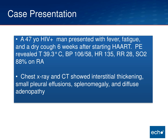I will start with a case presentation. This is a case that Heidi Crane, one of our faculty members here, and I took care of many years ago with a bad outcome — but I think we learned a lot from it. This 47-year-old gentleman presented with fever, fatigue, and dry cough six weeks after starting antiretroviral therapy. At the time, his examination showed a temperature of 39, blood pressure of 106 over 58, quite tachycardic at 135, tachypneic with low SATs of 88 on room air. Chest x-ray and CT scan showed interstitial thickening, small effusions, splenomegaly, and diffuse adenopathy.